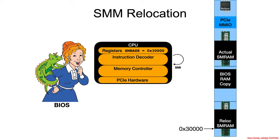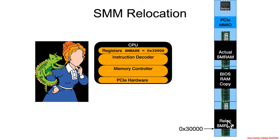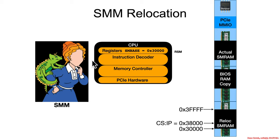Then the BIOS causes a system management interrupt, which vectors to the code at 0x30,000, and now it's in SMM. This is a representation of code executing in SMM — it's in a dark place, it's faceless because you can't see it, for reasons we'll see later.